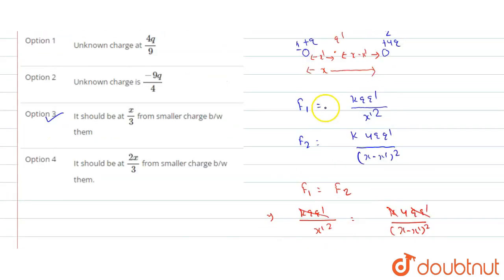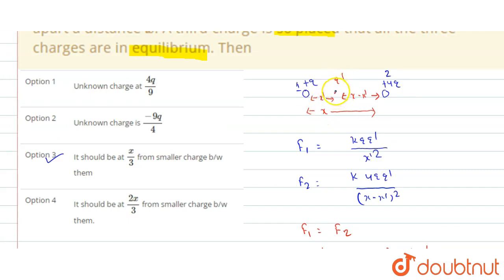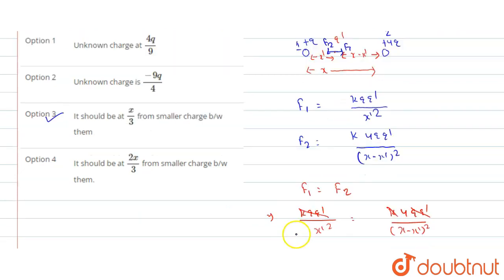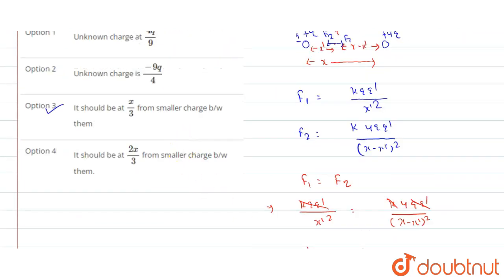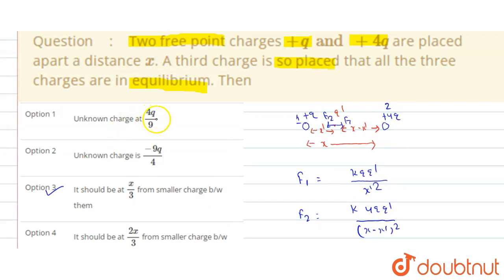Now, what is the sign of this charge? The charge q' must be positive, because only then will the forces F1 and F2 act in opposite directions — force due to +q pushes it one way and force due to +4q pushes it the other way — and since they have the same magnitude they cancel out. Looking at the options, the only positive charge given is 4q/9, so the unknown charge must be 4q/9. Therefore option 1 is also correct.